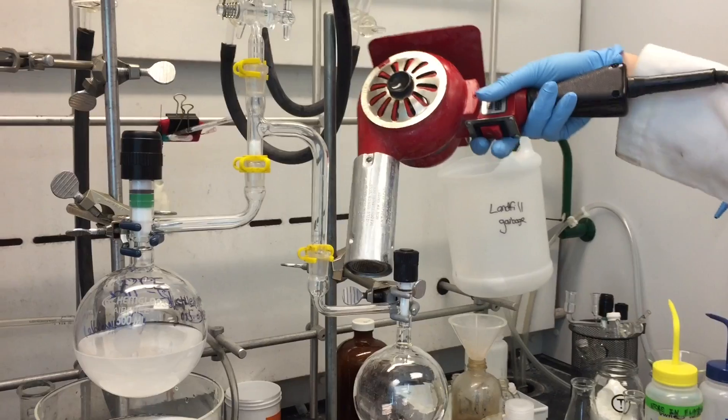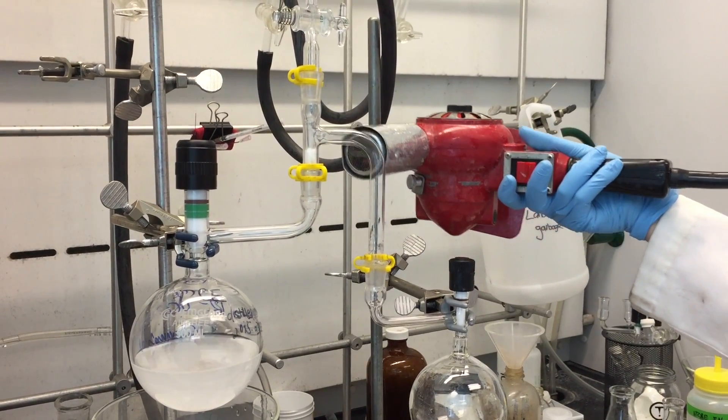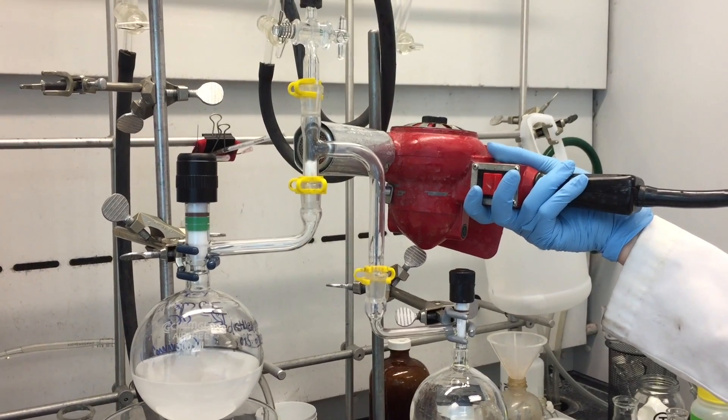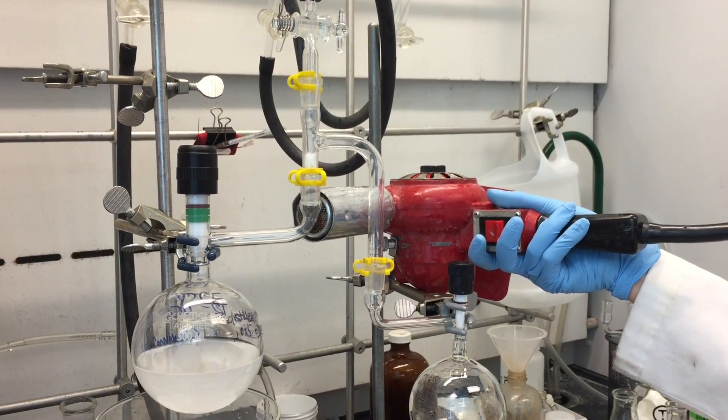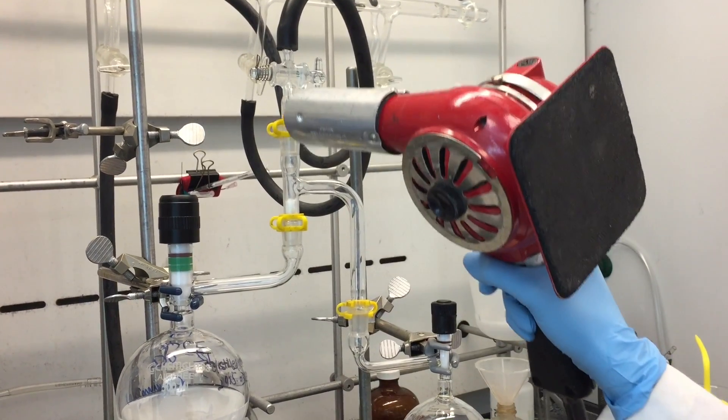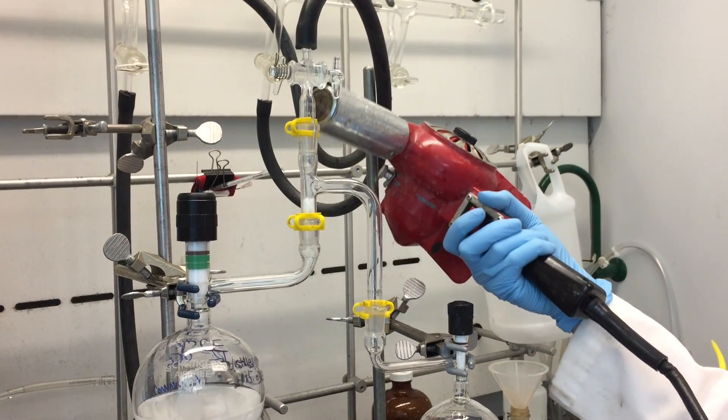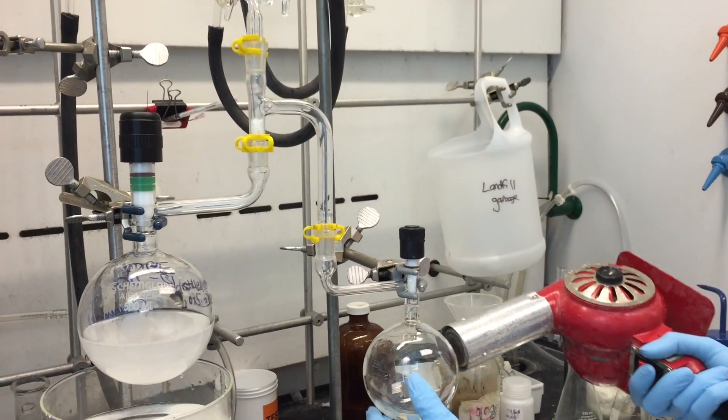You want to get it nice and warm all over. So we will let this cool down for another minute or so in vacuum, and then we will switch it to nitrogen and then redo the vacuum nitrogen process two more times.